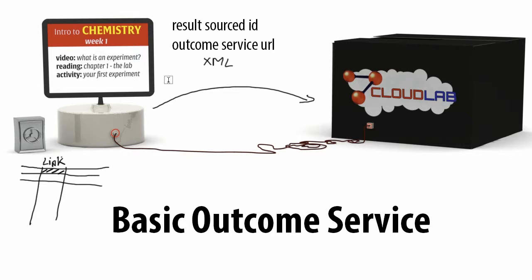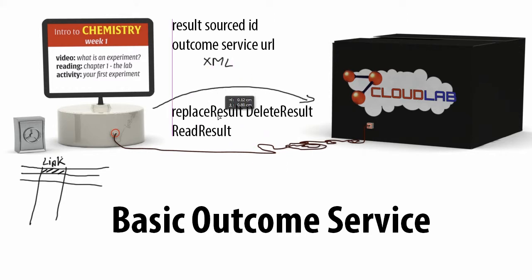Those three commands are: you can replace a result, you can delete a result, and you can also read a result. Replace result is the most important command, because that's the command you're going to use to post a grade from the tool provider to the tool consumer. Delete result is where you want to remove a prior result — for example, when a submission is reset or the user has to start again. So basically you're going to notify the tool consumer that the result has to be cleared. Cleared doesn't mean it's physically deleted on the tool consumer side — it may stay in history — but it's a way to communicate a reset of a grade.